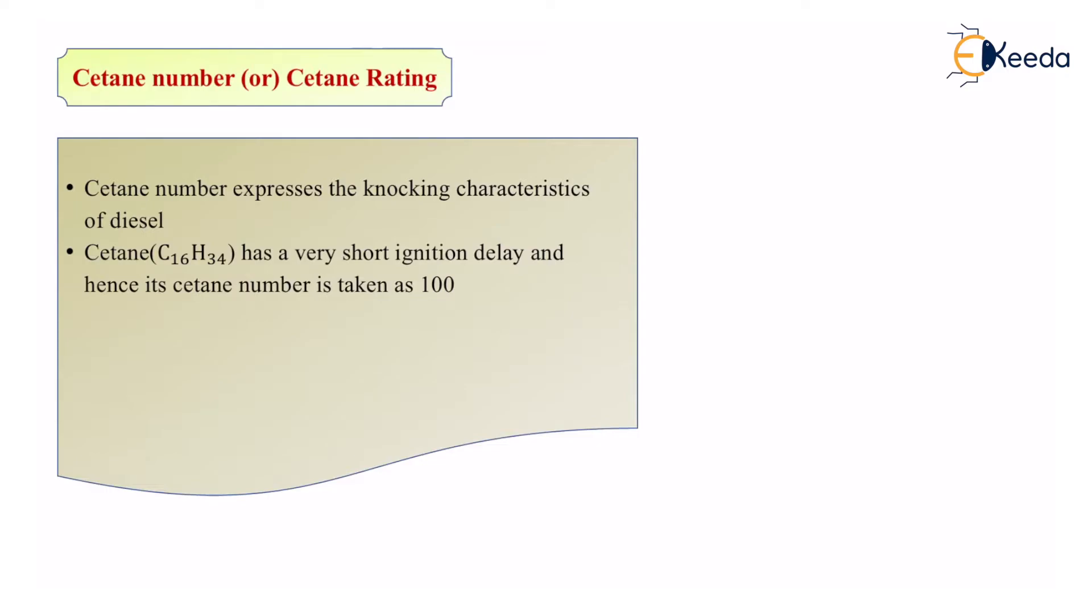Cetane C16H34 has very short ignition delay and hence its cetane number is taken as 100. On the other hand, alpha-methyl naphthalene has very large ignition delay and hence the cetane number is taken as zero.